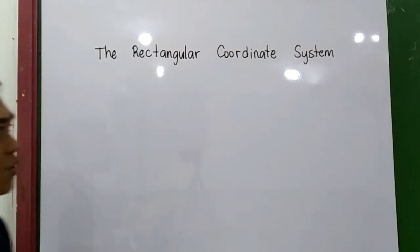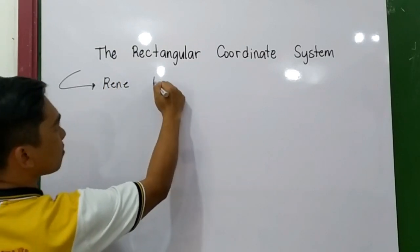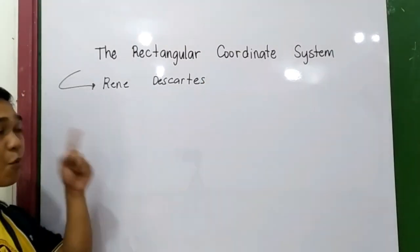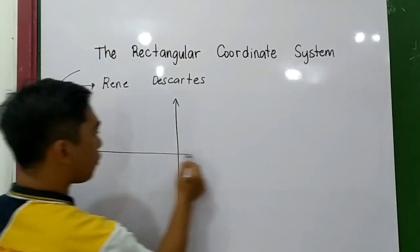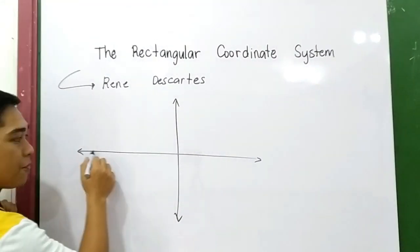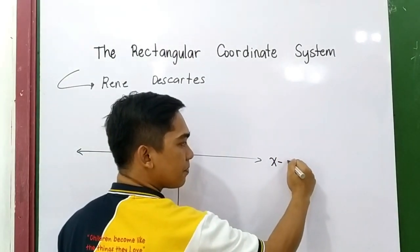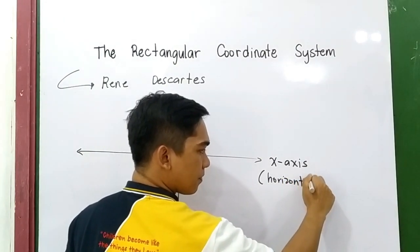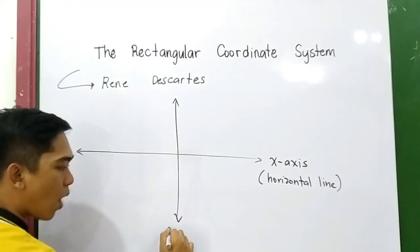The Rectangular Coordinate System was introduced by René Descartes. Our coordinate system is divided into four quadrants, or into four regions. The horizontal line is what we call the X-axis, and the vertical line is the Y-axis.